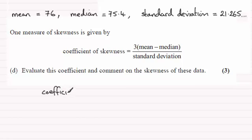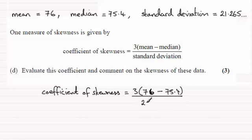I'm just going to write an intro though and just say coefficient of skewness. And what we find is it's three times the mean, which is 76, minus the median, which is 75.4, and all of that is divided by the standard deviation which we worked out was 21.265. And if you work this out, what you end up with is 0.0846.